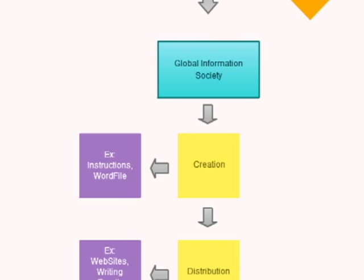Hello, my name is Mauricio Gomez and today I'm going to talk about a global information society. The global information society is broken up into four parts. The first part is the creation — you have to create something. An example of this would be a set of instructions or a word document.